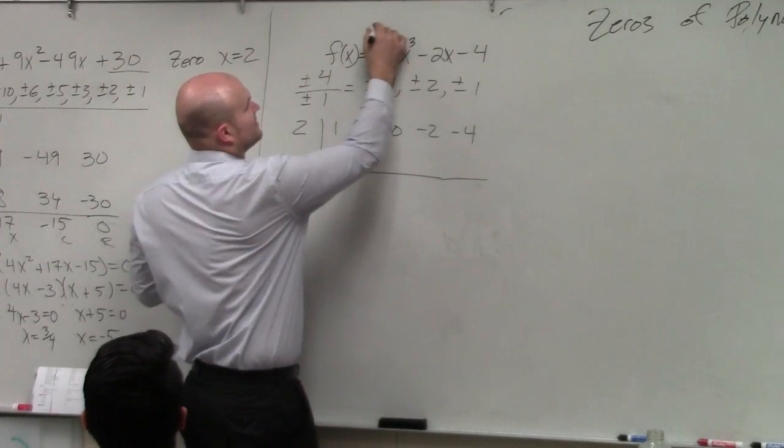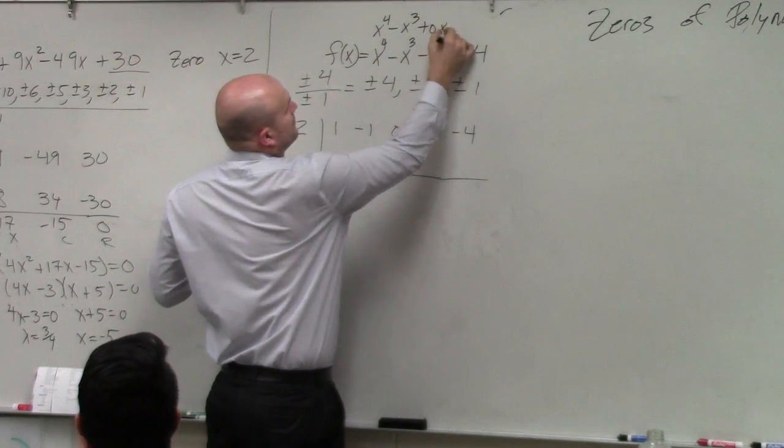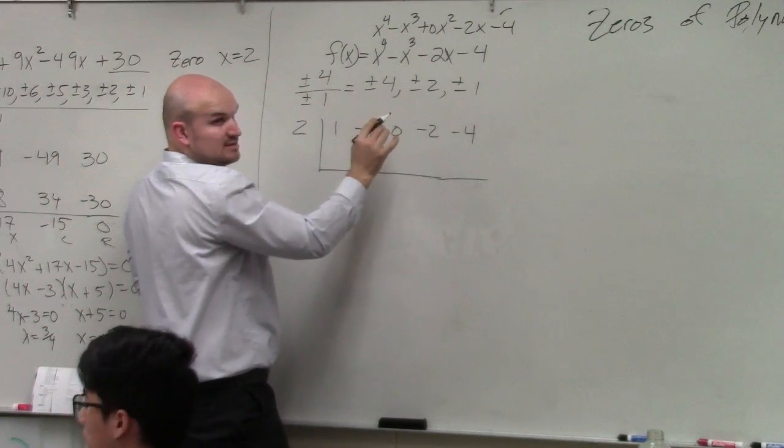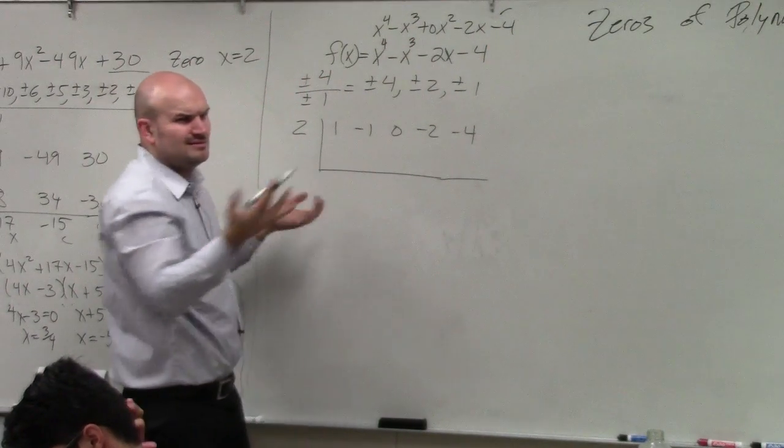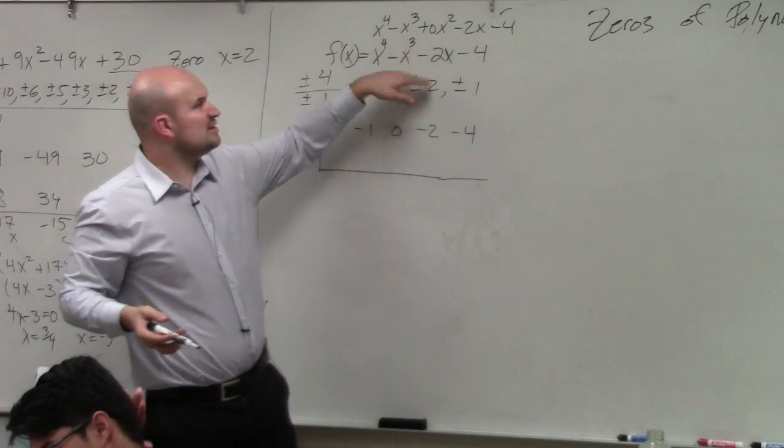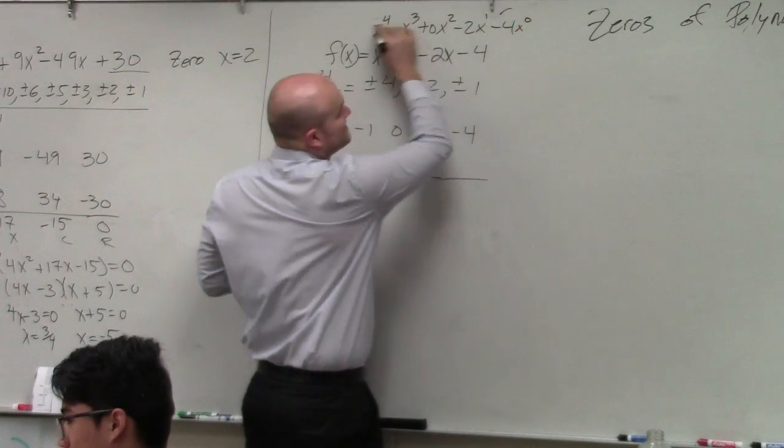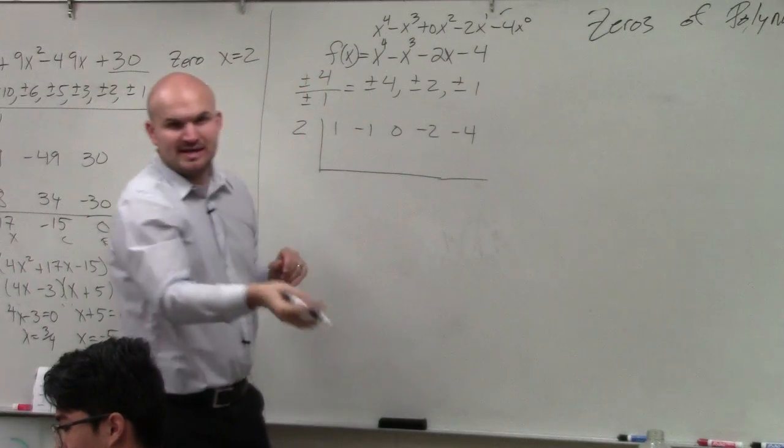Because you don't have an x squared, so you have to rewrite this. These are equivalent, correct? Because what's 0 times x squared? It's just 0, right? These are the same. But you have to have your exponents going in descending order. 4, 3, 2, 1, 0, all the way down.